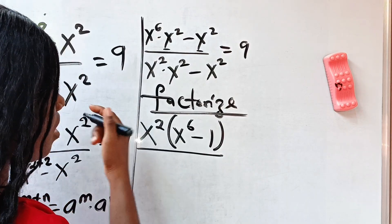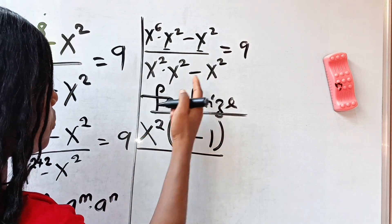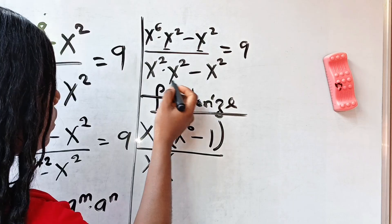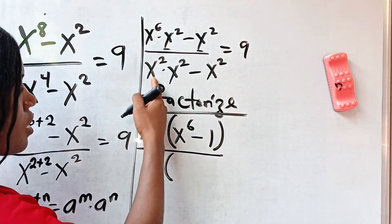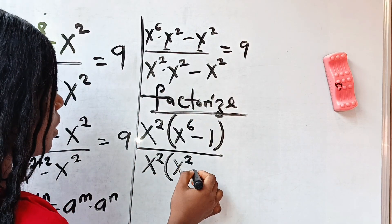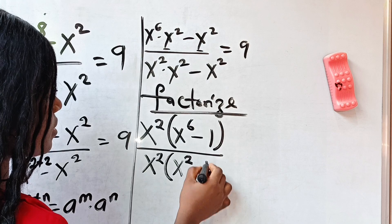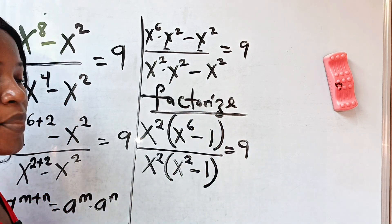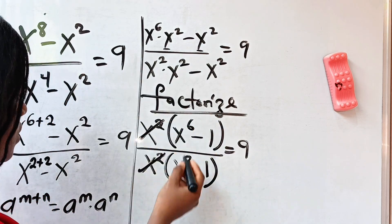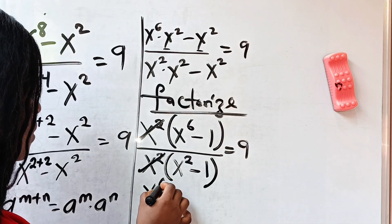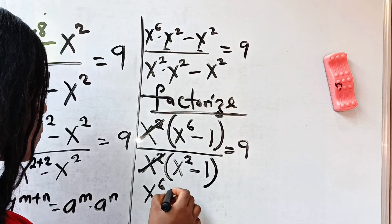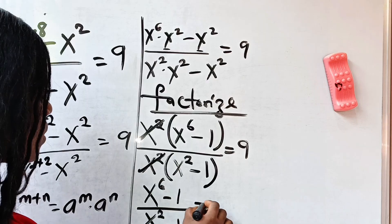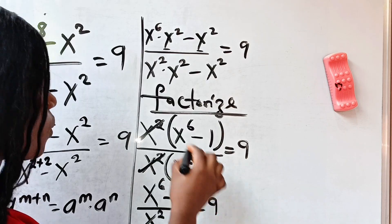Divided by — here, let's bring out x to the power of 2 from the denominator as well. When this is divided by x squared, x to the power of 2 will remain. Minus, when x squared is divided by itself, 1 will remain. So the x squared factors cancel, and we have x to the power of 6 minus 1, divided by x to the power of 2 minus 1, is equal to 9.